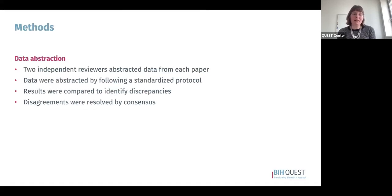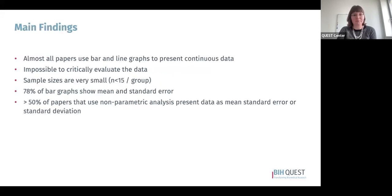We then proceeded with data abstraction. Two independent reviewers separately abstracted data from each paper following a standardized protocol, then results from the two abstractors were compared to identify discrepancies, which were resolved by consensus. There were several main findings, which I'll discuss briefly before going back into the methods of this particular type of study.